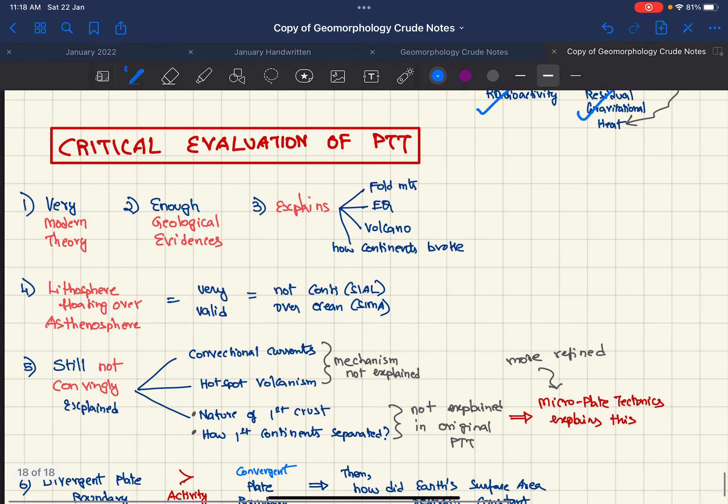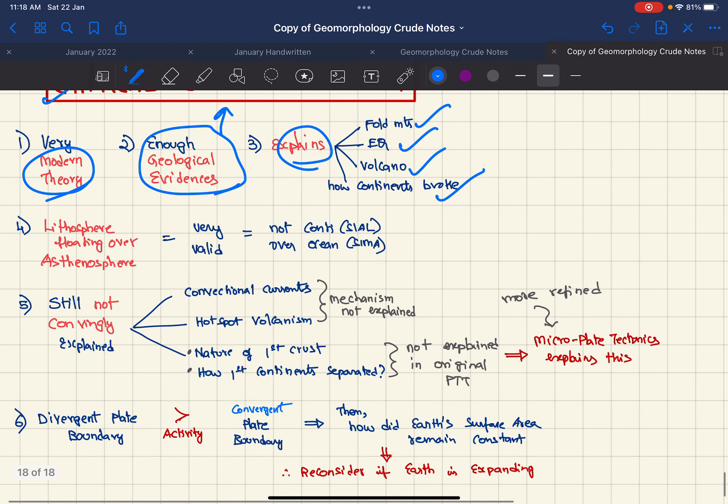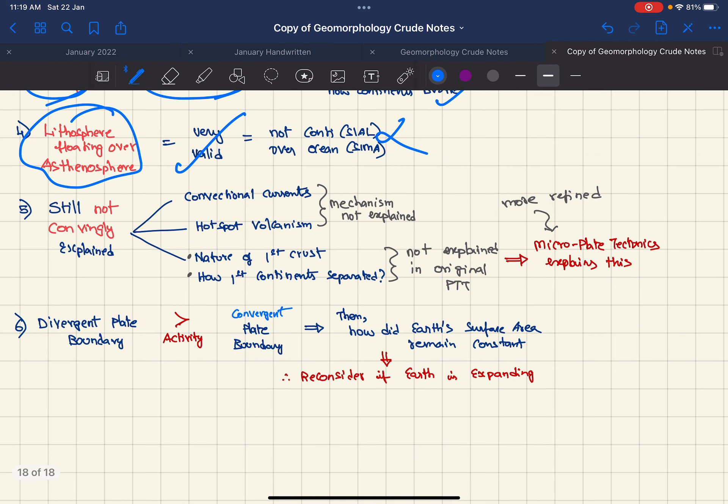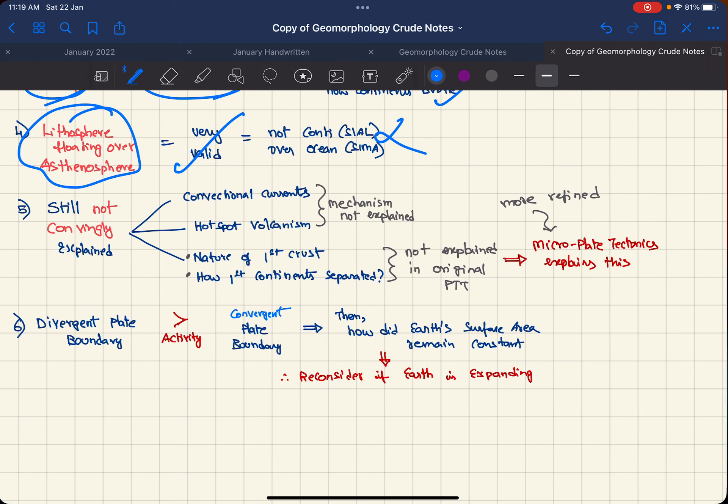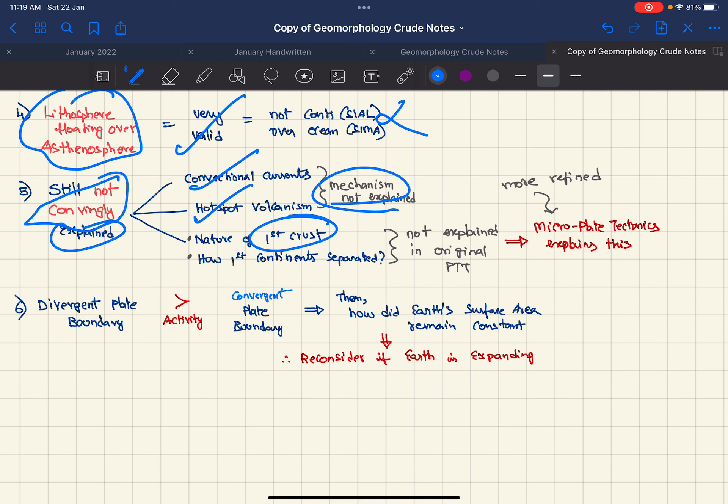Now we are going to the critical evaluation of PTT. It is a very modern theory. It has enough geological evidences to support the theory. It can explain fold mountains, earthquakes, volcanoes, and how continents broke. Lithosphere floating over asthenosphere is very valid. However, there are some limitations. It does not convincingly explain the mechanism of convection currents and hotspot volcanism. Also, the nature of the first crust and how first continent separated is not explained in the original PTT.